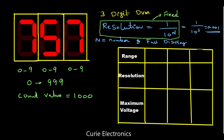Now, what are the voltage ranges it can show? We can measure in the 1 volt range, then the 10 volt range, then the 100 volt range. With respect to these ranges, we will see how the resolution changes and what is the maximum voltage we are able to read.